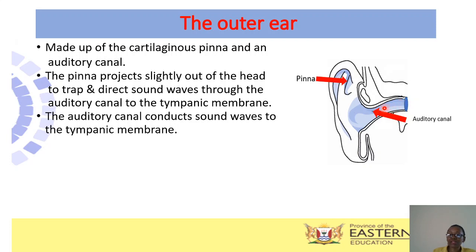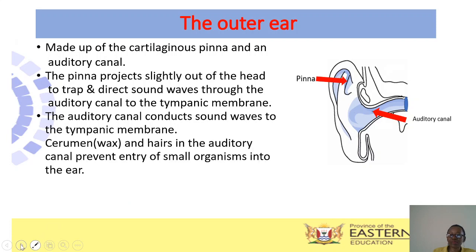The auditory canal is lined with glands that secrete a waxy substance called cerumen. There are also hairs in this canal. The hairs together with the cerumen have got a protective function for your ear. They both prevent the entry of small organisms into your ear, trapping those small organisms and preventing them from moving further into your ear.